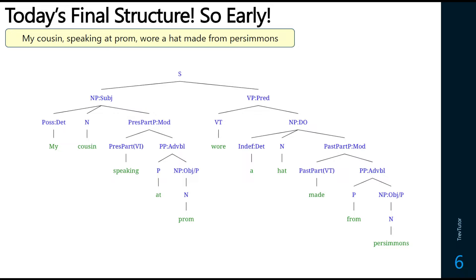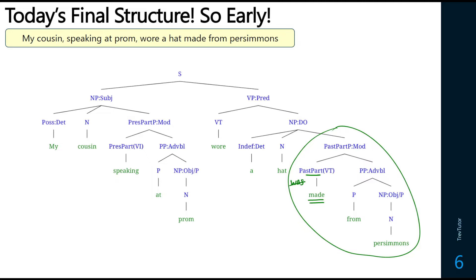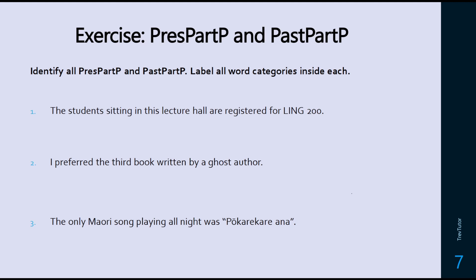For our main structure — 'wore a hat made from persimmons' — we would have had 'that was made from persimmons,' but we have a deleted passive. So 'made' is a past participle acting as a transitive verb, since someone made a hat from persimmons. And then we have the PP adverbial 'from persimmons' on the right. That is how we can do past participle phrases.